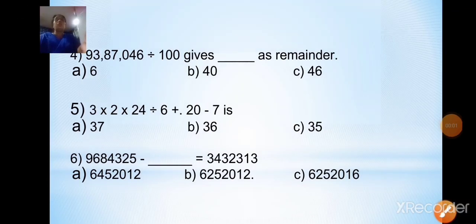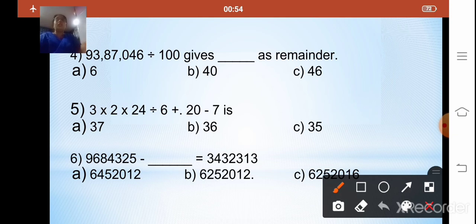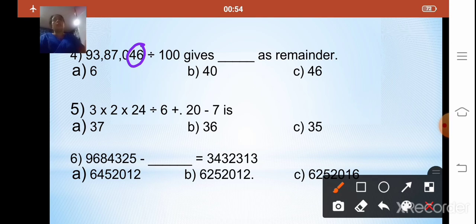The fourth question: 93,87,046 divided by 100 gives dash as remainder. When a number is divided by 10, the last digit is the remainder. When divided by 100, the last two digits are the remainder. When divided by 1000, the last three digits are the remainder. Since this is divided by 100, the remainder is 46. The correct option is C.